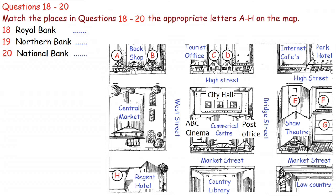Sure. For the Royal Bank, you need to turn left when you leave the centre, go along Market Street past the post office, and turn left up Bridge Street past the Shaw Theatre. Then you take the first right, you'll see an internet cafe on the other side, and the Royal is just a bit further along on the right, directly opposite the Park Hotel.